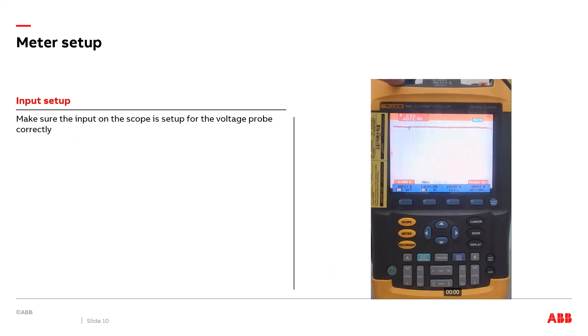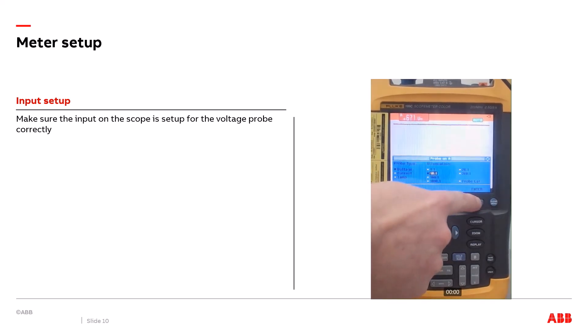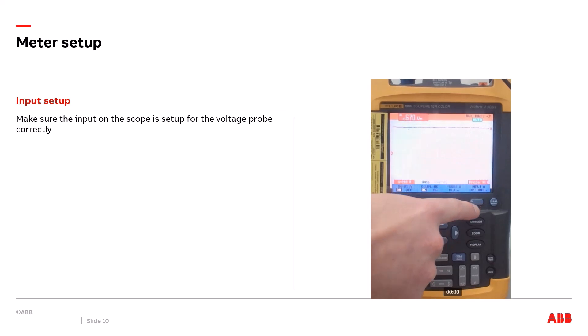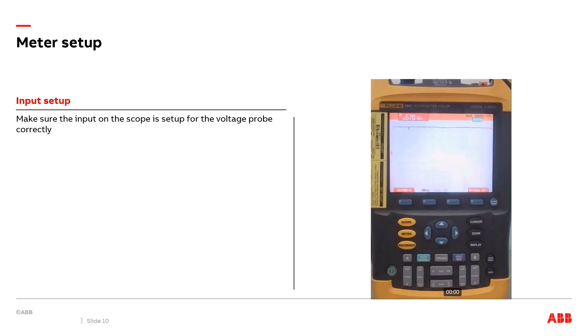Before we start taking measurements we want to always make sure that the scope is set up correctly to the voltage probe that's attached to it. I'm using a 10 to 1 voltage probe and you can see here I have that set up correctly. I'm also going to reduce the bandwidth on the input channel down to 10 kilohertz which is the lowest setting on the scope. The signal I'm measuring only has a frequency of 360 hertz so any high frequency noise that can be picked up by the voltage probe I don't want that to be displayed on the scope screen and we'll see in the next few slides an example of what that looks like, the difference between the high frequency noise versus cleaning up the signal and reducing the bandwidth.